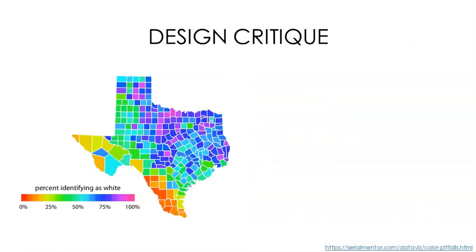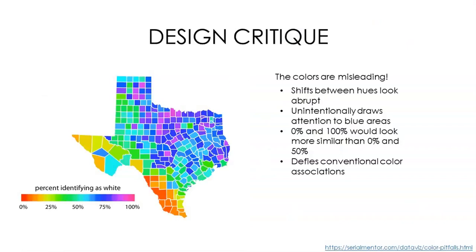Now we'll get a little bit of practice in critiquing visualizations, and a demonstration of why a little thought about design principles can go a long way towards making visualizations more effective. Take a look at this visualization. In my opinion, the colors on this map are misleading — the shifts between hues look abrupt, and my eye is drawn to the dark blue areas for no real reason. Zero percent and 100% identifying as white would look more similar than 0% and 50% based on this color scheme, and in a way it defies conventional color associations, with red being the 0% concentration.